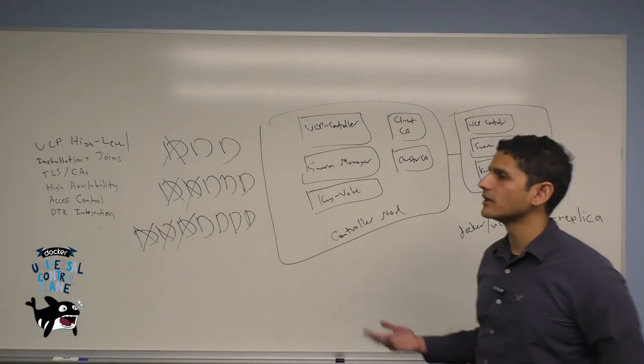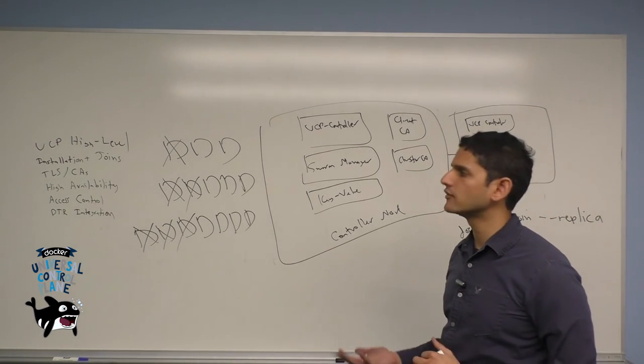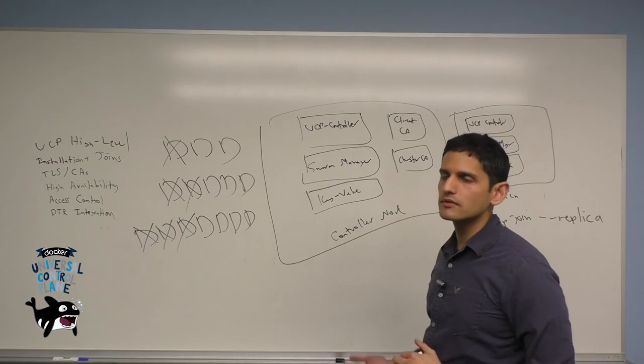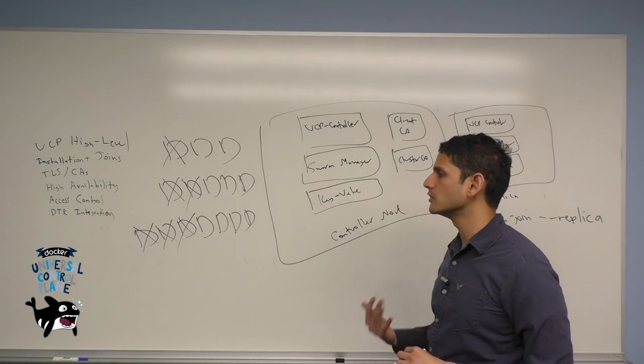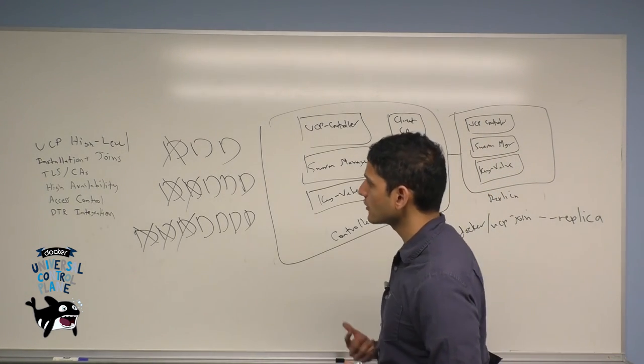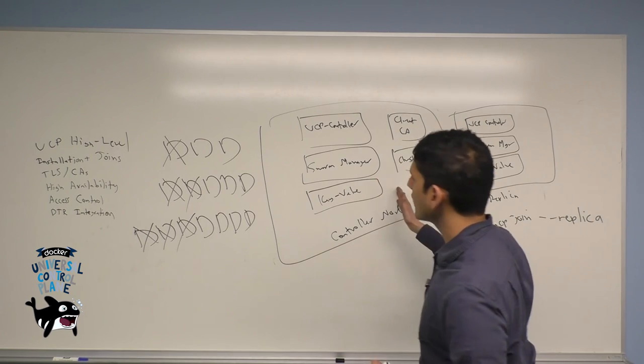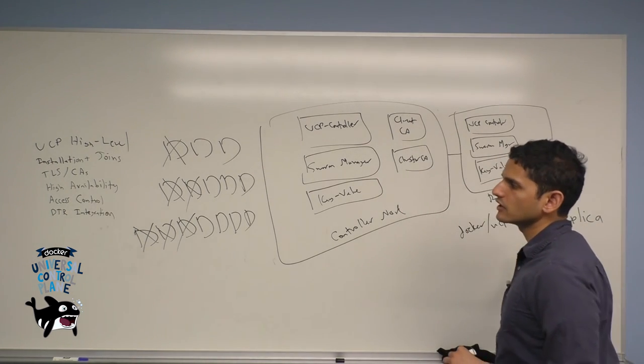The trade-off between these is the number of nodes that you're willing to use for HA in your system, the number of fault tolerance you hope to have in your system, but also the performance. The key value store is replicating information across each of these nodes.